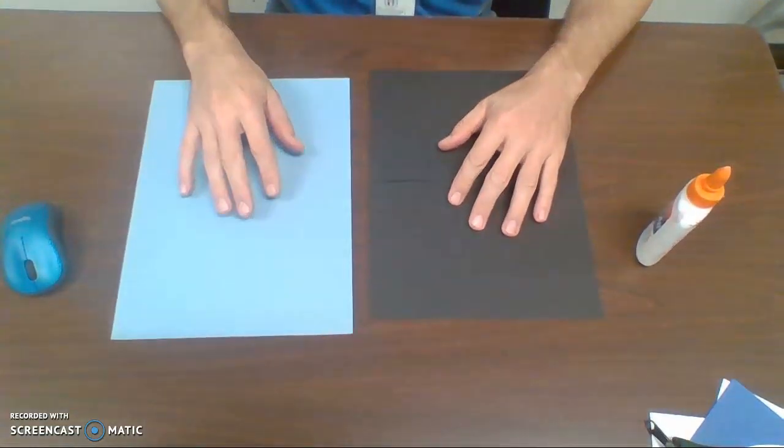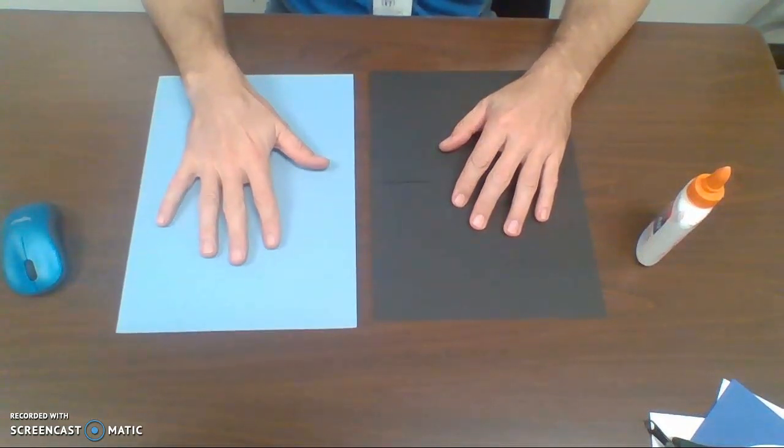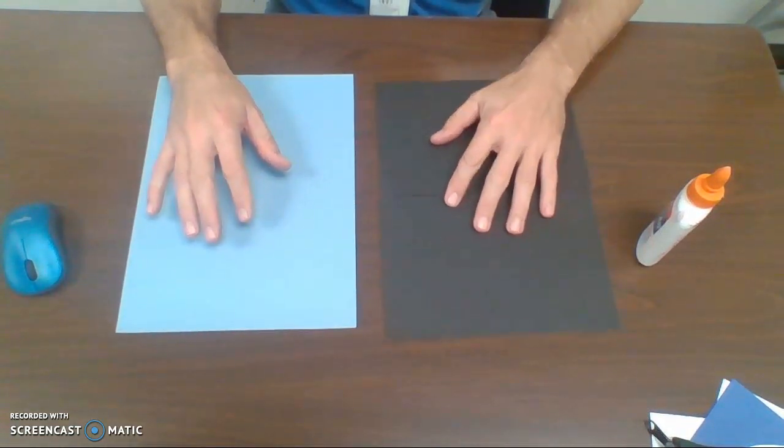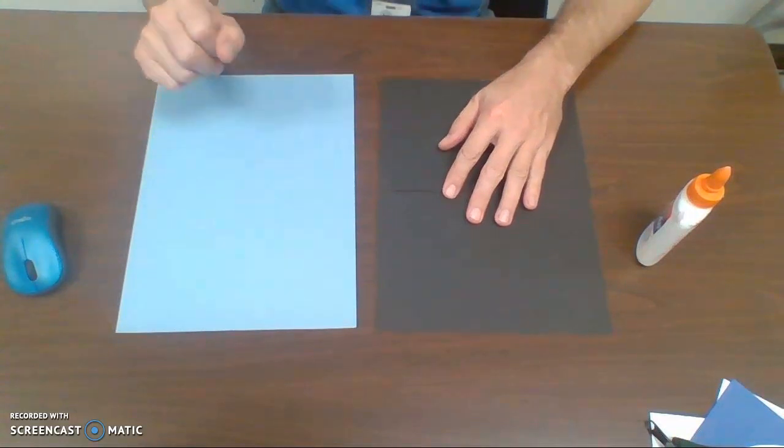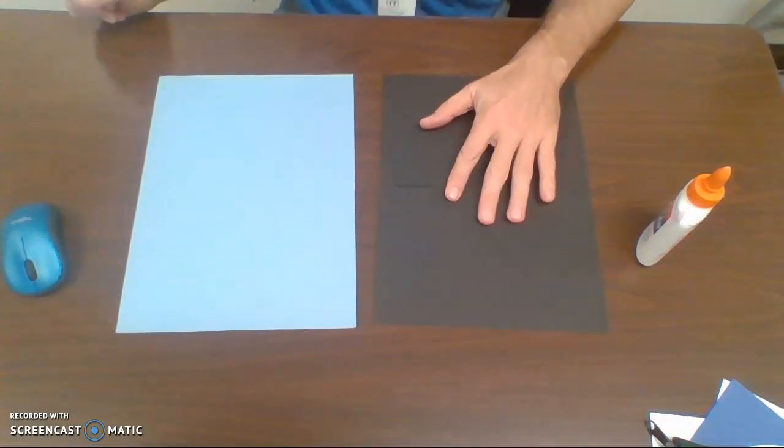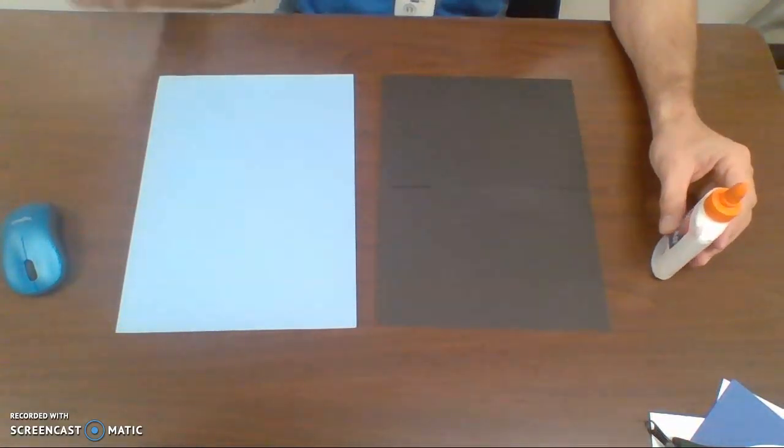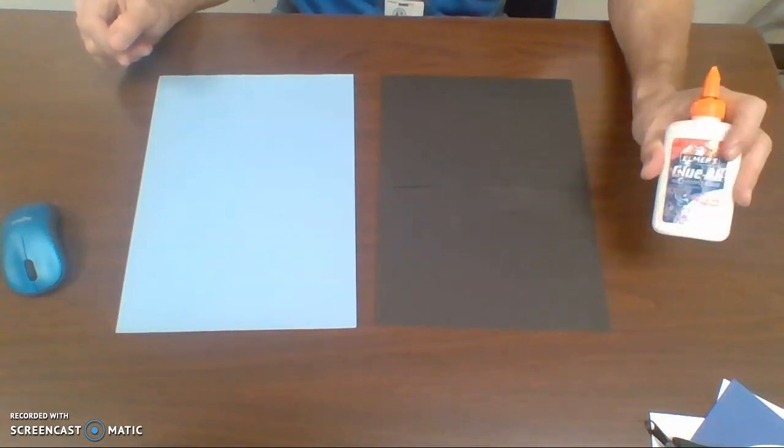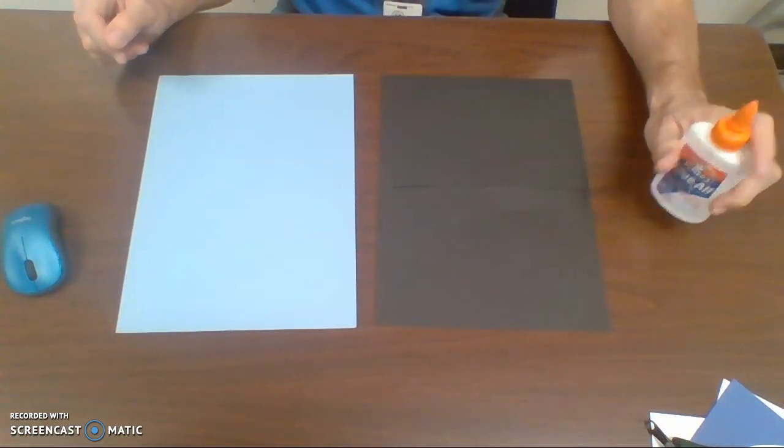Now for this project, this is what you're going to be needing. You will need two sheets of paper, different colors. One will be for your background for like a sky color, and the other one is going to be for your tree. A lot of you are going to want to use brown. I like to use black. And here in Austin, there are a lot of very dark trees, and so you'll also need some glue.